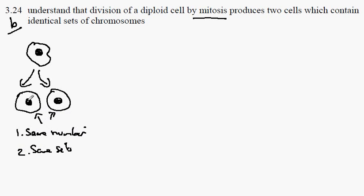So the set of chromosomes in this cell would be the same as the ones here. This, of course, requires that this cell here has to copy its chromosomes.